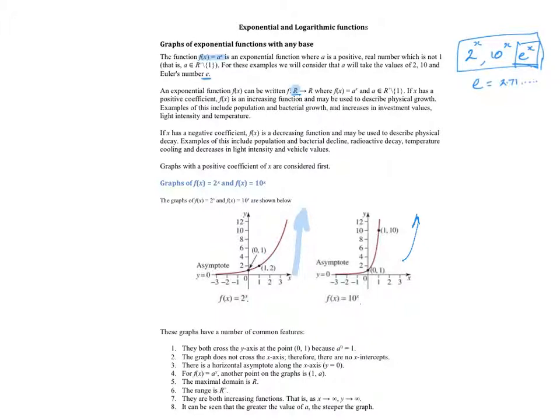Key features we should be aware of: they all cross the axis at (0, 1), so the y-intercept is always 1 because any number to the power of 0 is always 1. There's a horizontal asymptote at y = 0. The domain is R, the range is R+. They're increasing functions.